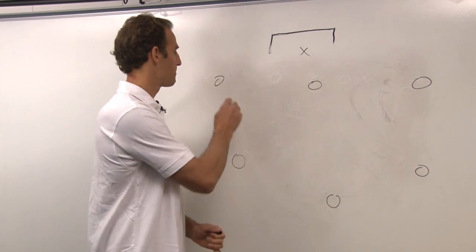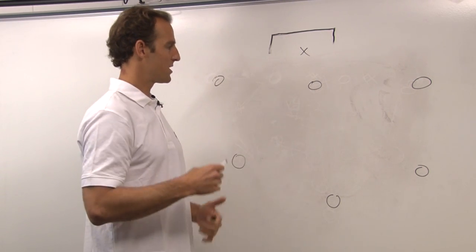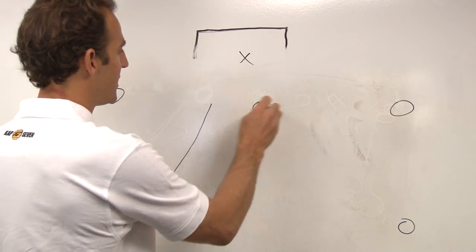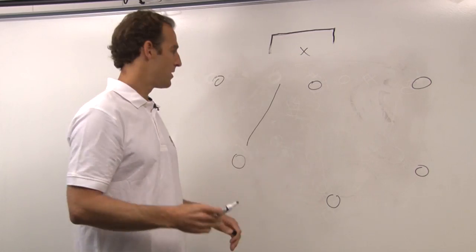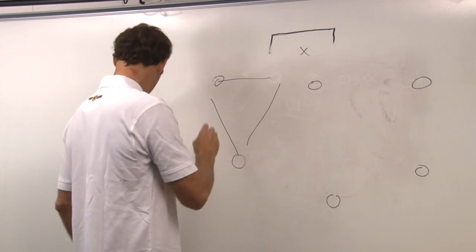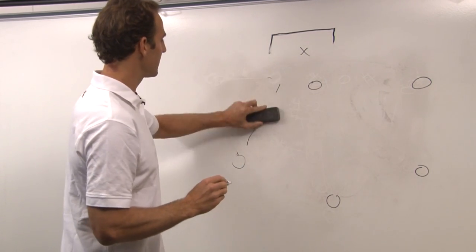So typically on a 3-3, what teams will do on the most fundamental level is they'll either swim one player into the post and then they'll be in a 4-2. Or they'll swim this player in, this player will come down and they'll be in a 4-2. And it's pretty clear to the defense.